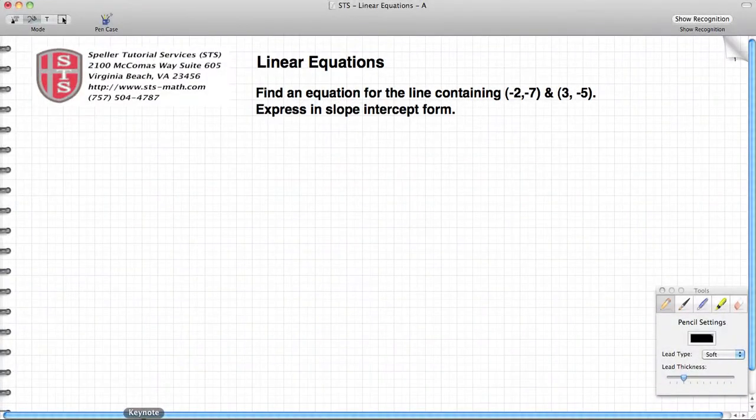Welcome back to Speller Tutorial Services. Today we're going to talk about linear equations. We're going to try to find an equation for the line containing the points (-2, -7) and (3, -5), and once we find that equation, we're going to express it in slope-intercept form.